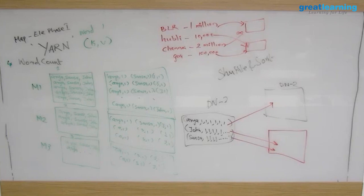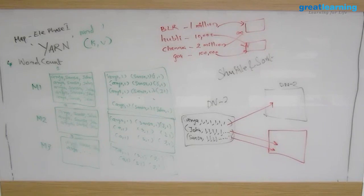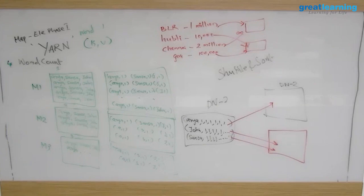Hadoop was originally written in Java, so a lot of people started writing MapReduce in Java. To be fair, it's very difficult — the learning curve is very high. In Spark, people prefer either Scala or Python. You can learn Scala in a day and start writing Spark programs easily. Writing a Python program takes one-tenth of the time. MapReduce does support Python too, but Spark is still much faster overall.